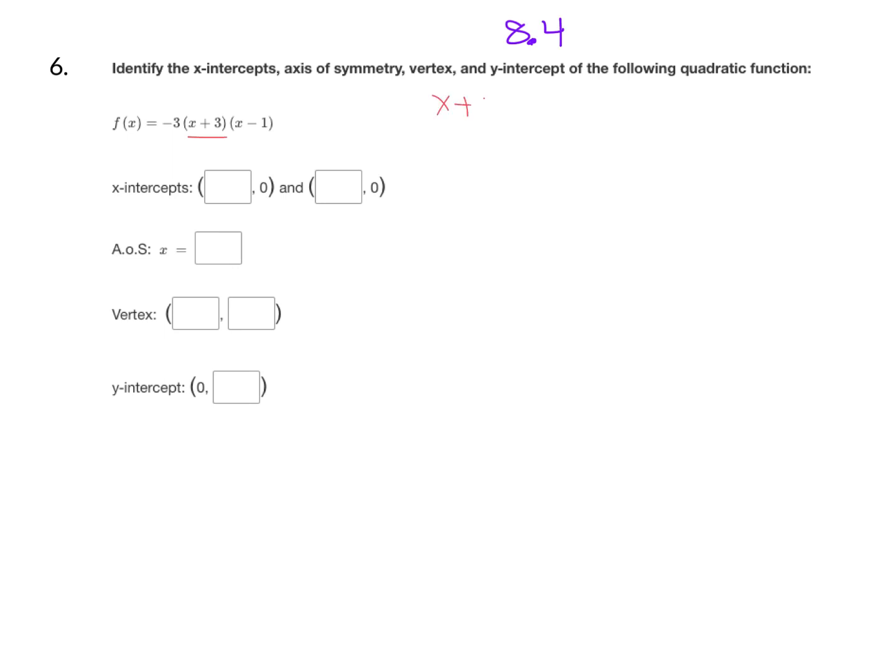So I'm going to start with that first factor, x plus three equals zero. It's a quick one-step equation. If we subtract three on both sides, we get x equals negative three. So our x-intercept is going to be at negative three zero. To get the second x-intercept, we just take the second factor and set it equal to zero. x minus one equals zero. You're going to add one on both sides to get x alone, and we get positive one. Those are the two x-intercepts, which are the p and the q in the equation.